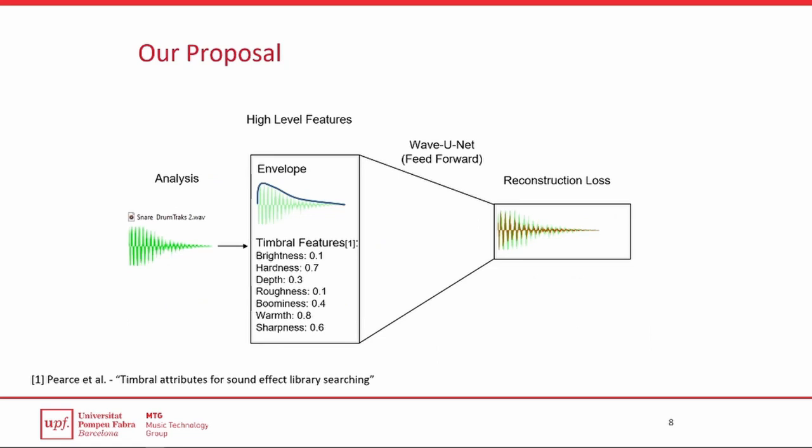In our case, we wish to directly map a chosen set of features to the output sound. The Wavenet architecture has been shown to generate high-quality waveforms when conditioned on input features. However, the autoregressive nature of the model makes it resource-intensive, and the short nature of percussive sounds do not require the use of a long-temporal model.